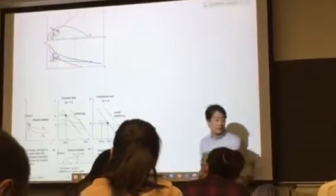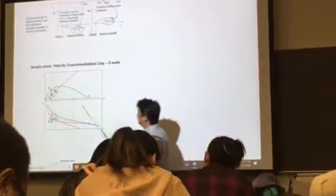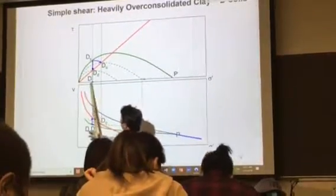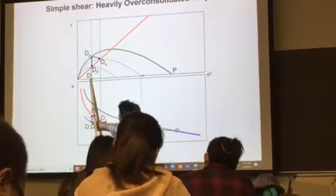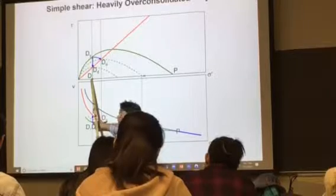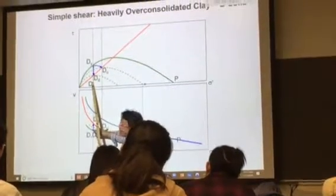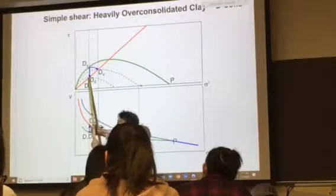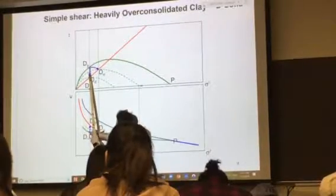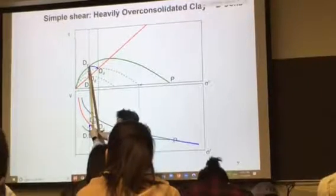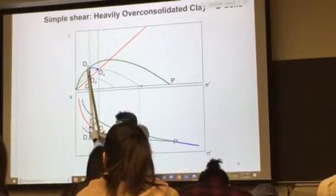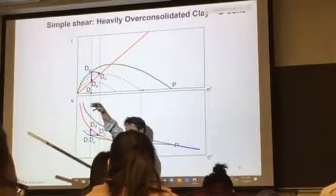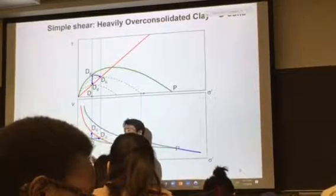Let's look at the undrained strength. The undrained path is always going to be straight if it's elastic. So it keeps on going up. Again, I passed this point but I'm still okay because I'm not ready yet. I keep on going. Now I yield. So once I yield in undrained condition — but it's dilated, so it wants to dilate, but it can't dilate, so your excess pore pressure becomes negative.